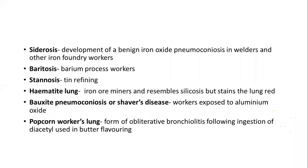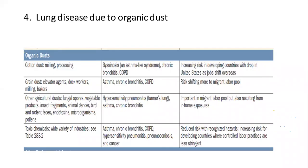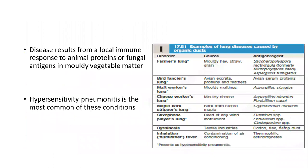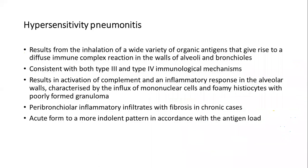Moving to lung disease due to organic dust: various organic dusts cause occupational lung disease. Organic dusts that can cause lung diseases include cotton dust, grain dust, and other agricultural dusts such as fungal spores, vegetable products, and insect fragments. Patients typically have symptoms like COPD, asthma, or chronic bronchitis, or hypersensitivity pneumonitis. These conditions result from a local immune response to animal proteins or fungal antigens in multi-vegetable matter. Among them, hypersensitivity pneumonitis is the most common.